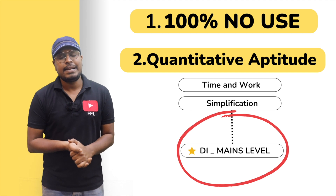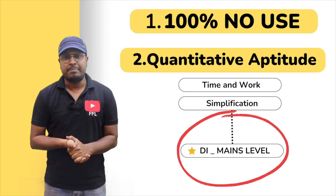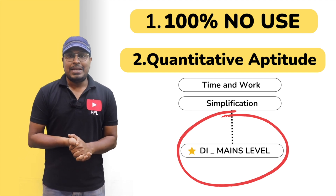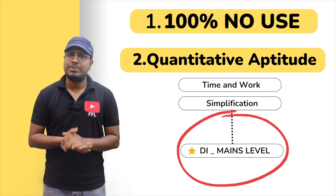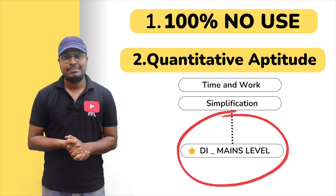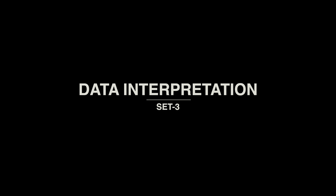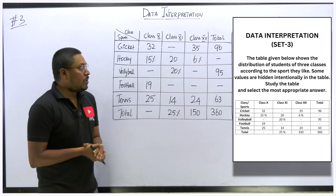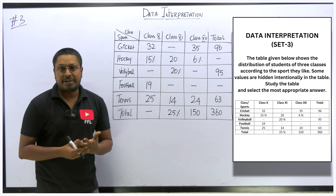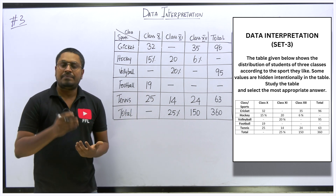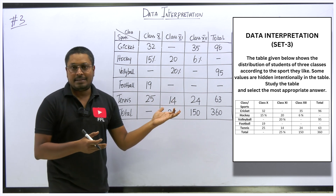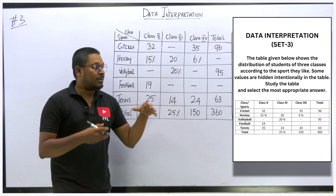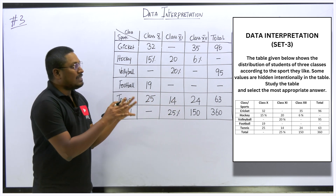This will definitely be helpful for students going for CAT exams and bank mains exams. Now let me move on to the third set of data interpretation, which is for the mains level. I hope you have already written the third set as a test.